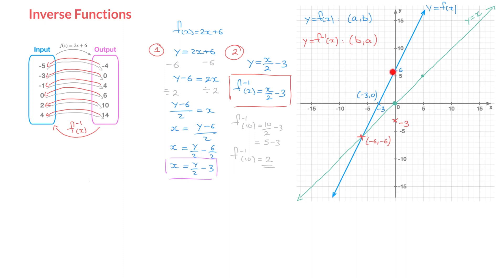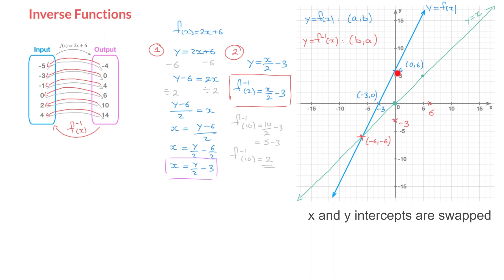Similarly, f(x) crosses the y-axis at 6, at the point (0, 6). So the inverse function has to pass through the point (6, 0), which is on the x-axis. What we quickly realize is that from a function to its inverse function, the x and y intercepts are swapped. Using this, along with the fact that the inverse function is the mirror image of f(x) across y = x, and that it passes through (−6, −6), we can draw the inverse function.